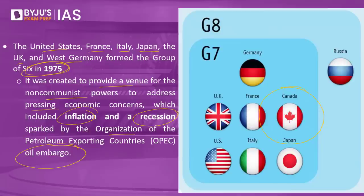Initially it was G6, then it became G7. Then we have another grouping called G8, which came into picture in 1998 when Russia was added to this grouping. Russia was part of the G8 until 2014, when it invaded Ukraine and occupied Crimea. As a result, Russia was suspended for annexing Ukraine's Crimea region, and the grouping went back to its original form called the G7.